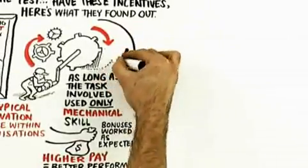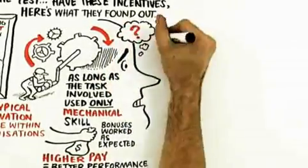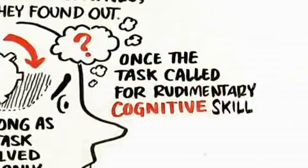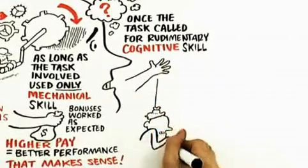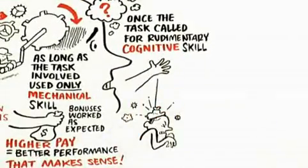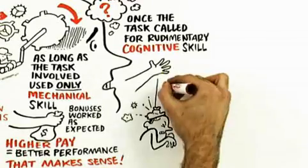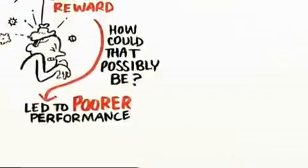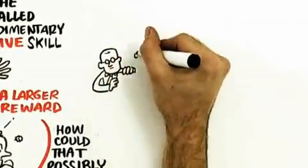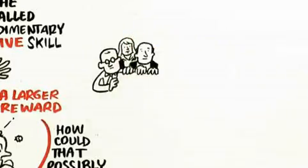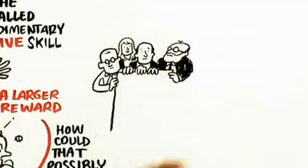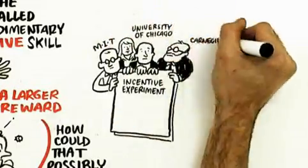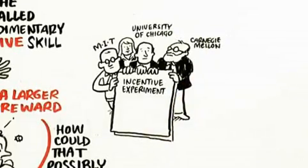But here's what happens: once the task called for even rudimentary cognitive skill, a larger reward led to poorer performance. This is strange, right? A larger reward led to poor performance. How can that possibly be? Now what's interesting is that these folks who did this are all economists - at MIT, one at the University of Chicago, one at Carnegie Mellon. The top tier of the economics profession, and they're reaching this conclusion that seems contrary to what a lot of us learned in economics.